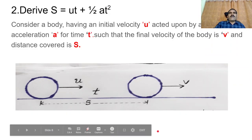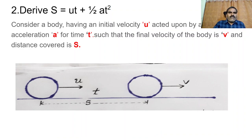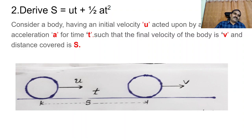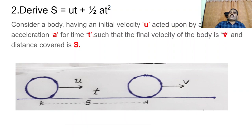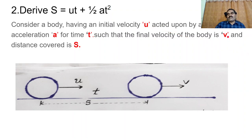The general mathematical formula is distance equals speed into time, or displacement equals velocity into time. But here we have two velocities, U and V. Whenever we have two velocities, we have to take the average velocity.